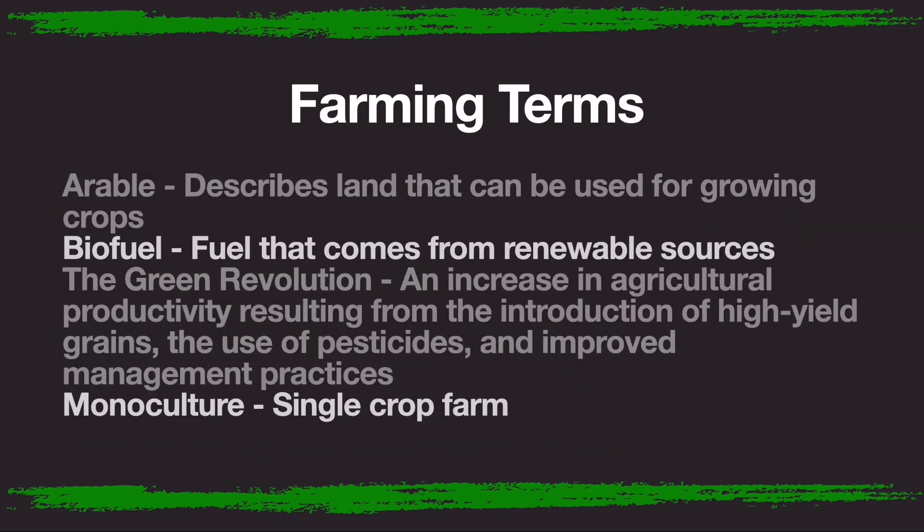Farming terms. Arable describes land that can be used for growing crops. Biofuel is fuel that comes from renewable sources. The green revolution is an increase in agricultural productivity resulting from the introduction of high yield grains, the use of pesticides, and improved management practices.